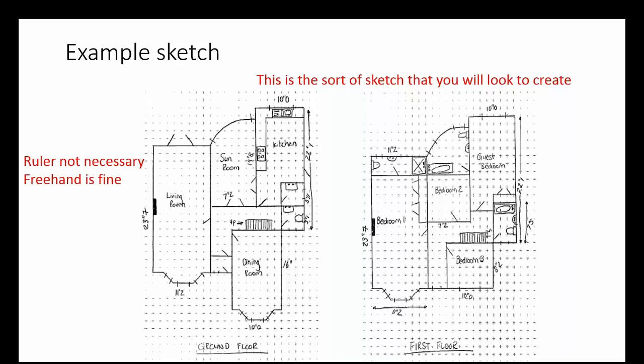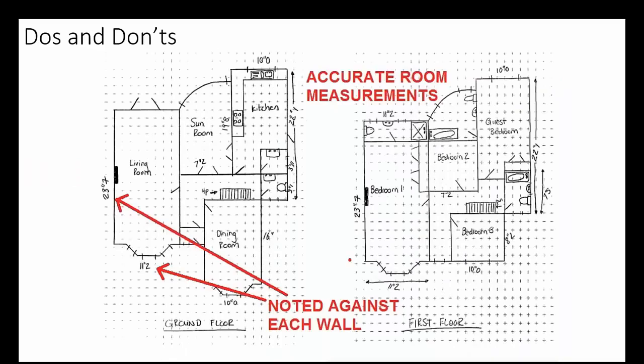In terms of the specifics, we all know we've got to get the rooms measured accurately. That's a given. So obviously, measure those as accurately as you can. And when you do so, pop the measurements against each wall. There's nothing worse than a square-looking room which is 10 foot 3 by 10 foot 10 and you don't know which wall is which. So, measurements clearly against each wall.